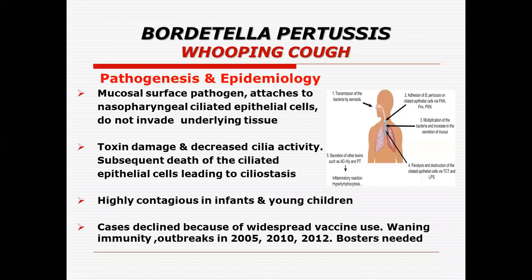The toxins damage and destroy and decrease the ciliary activity of the cilia. This leads to subsequent death and dysfunction of the ciliated epithelial cells, which is what we call ciliostasis. The functions of the cilia stop. This organism and the disease itself is highly contagious in infants and young children.